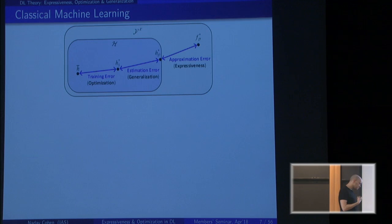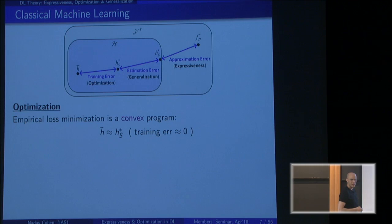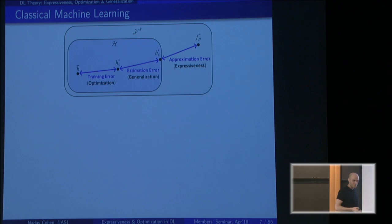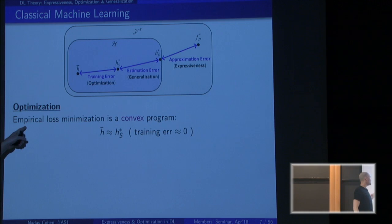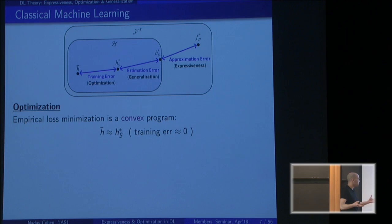Now let's reflect on the state of our understanding of how these three factors come into play in classical machine learning versus deep learning. In classical machine learning — models like SVMs — the fundamental principle is that empirical loss minimization boils down to optimizing a convex function, which we know how to do. So we can pretty much find h-star-S and the training error is essentially zero.